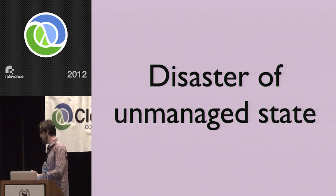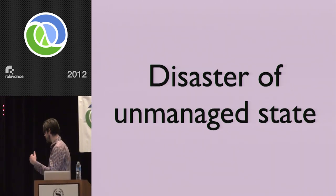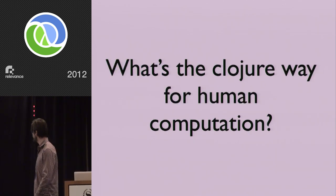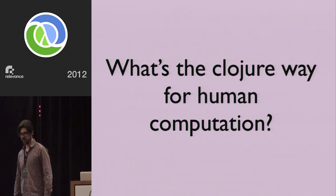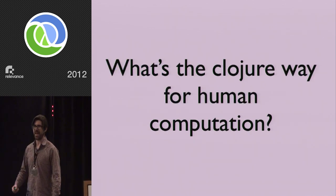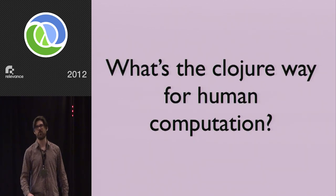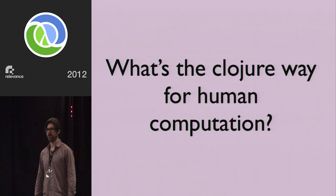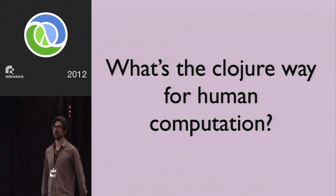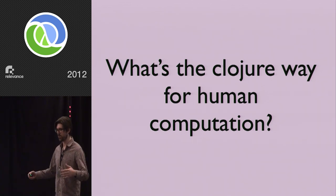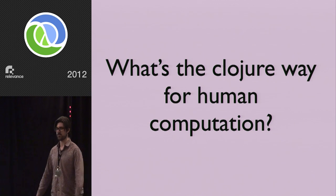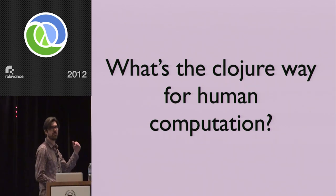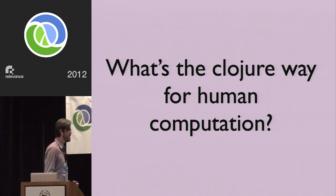At a basic level: we can't remember what we did, we can't reproduce what we did, we can't share it with other people. The question I have is: what is the Clojure way for human computation? How do we apply the principles, methods, and tools of Clojure and Datomic to this case when we're doing the computation?